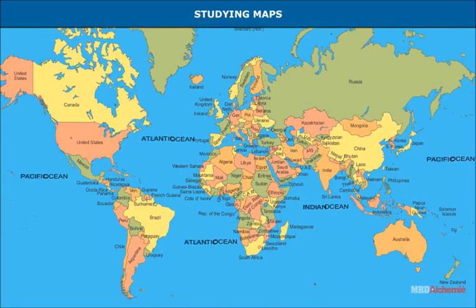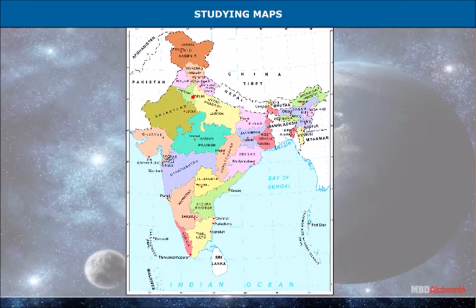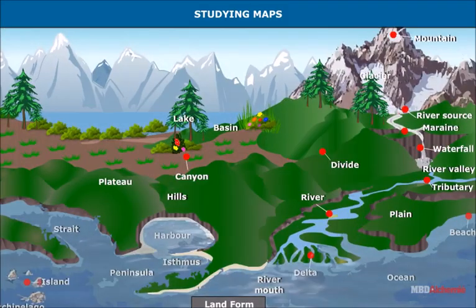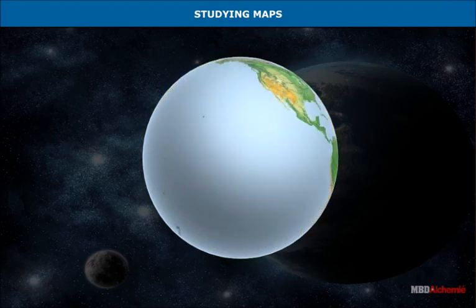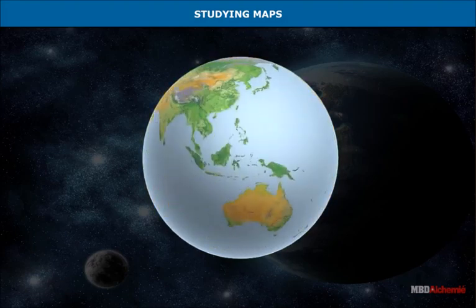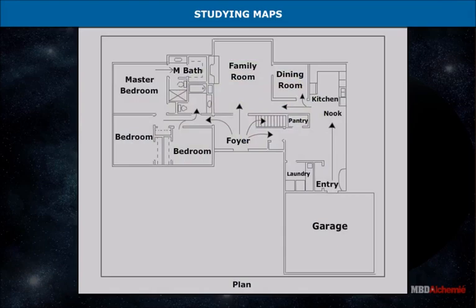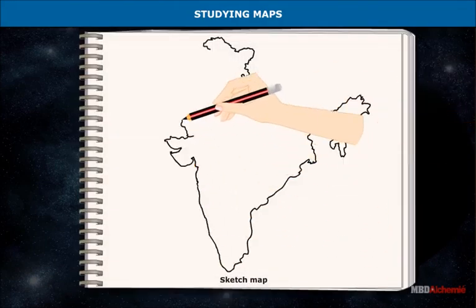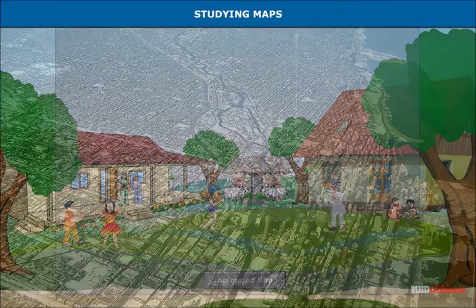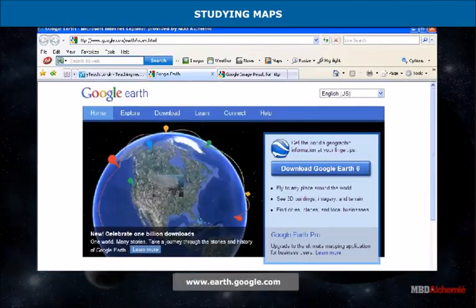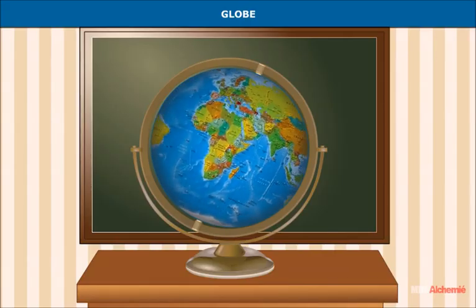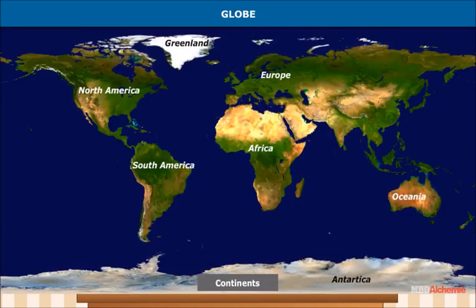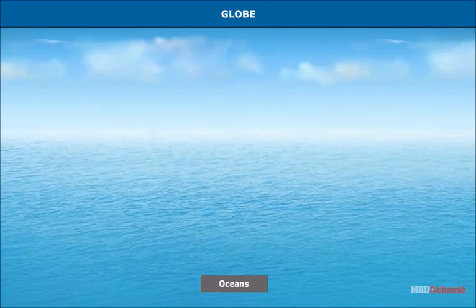These aids include a globe, plans and sketches, animated films, aerial views on www.earth.google.com, etc. A globe is spherical in shape. A globe is a map of the whole earth showing oceans and countries.